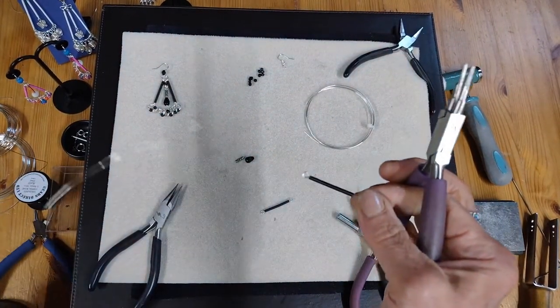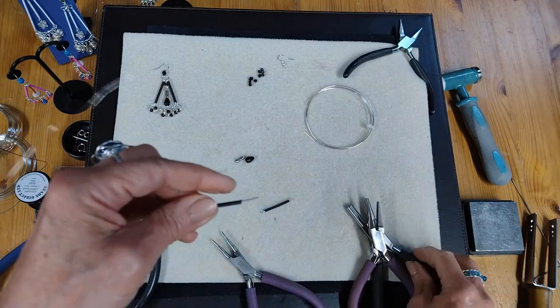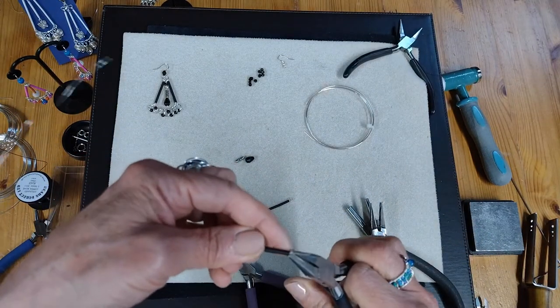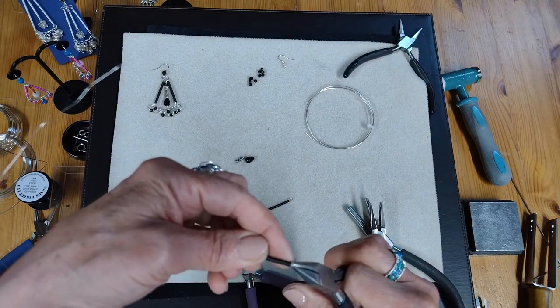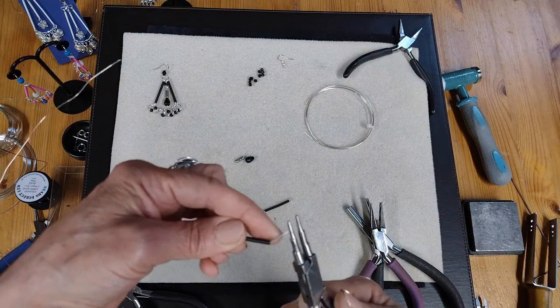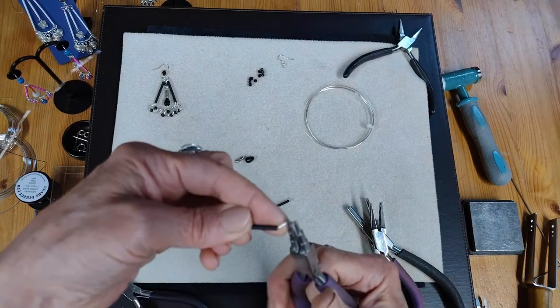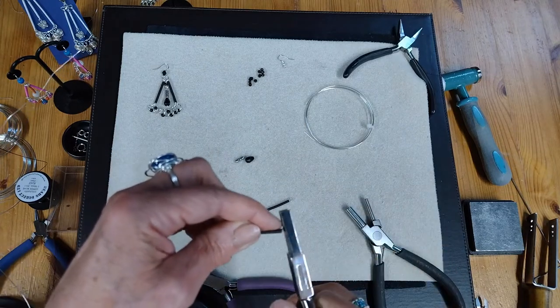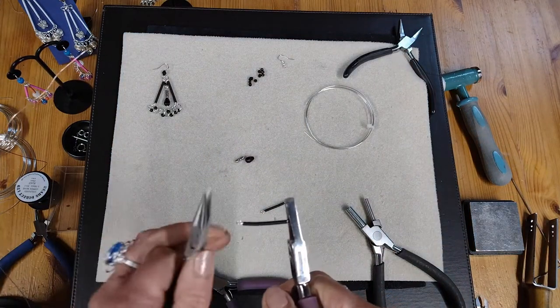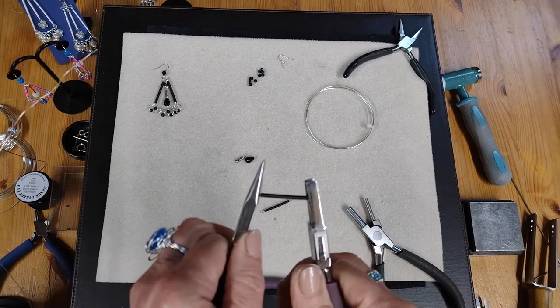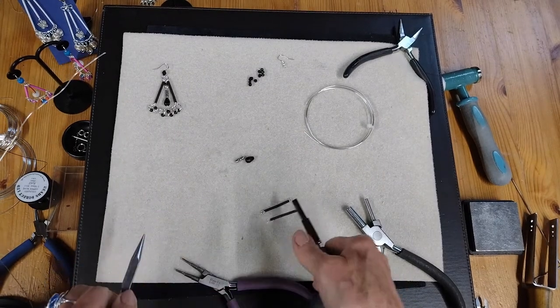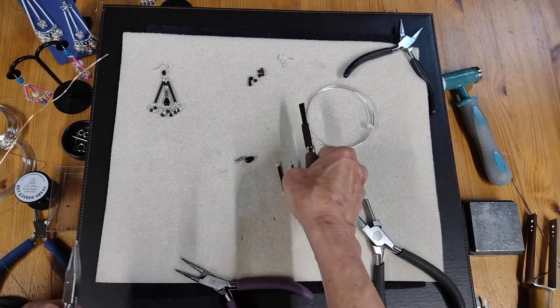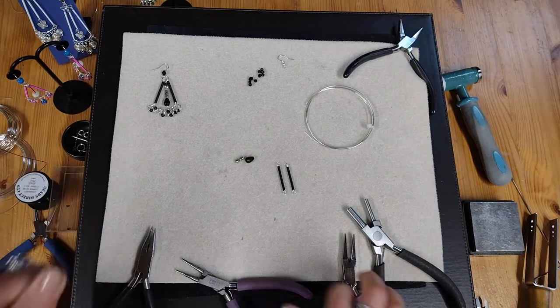So there's nothing complicated about these earrings. It's mainly a case of doing all these little procedures, making all the components, and then you put them all together right at the end. So if you were really making these earrings as a set, I would make all the components first and then you just put them together right at the end.